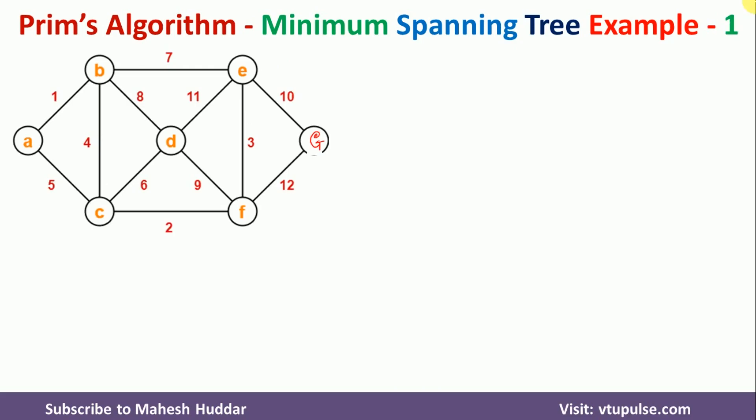In this example, I am going to consider this particular graph and then I want to find the minimum spanning tree as well as the total weight of the minimum spanning tree. In this case, if you notice, there are totally seven nodes: namely A, B, C, D, E, F, and G.